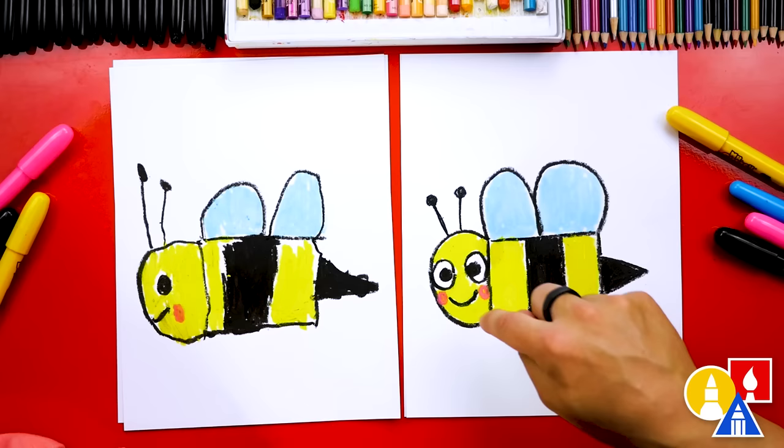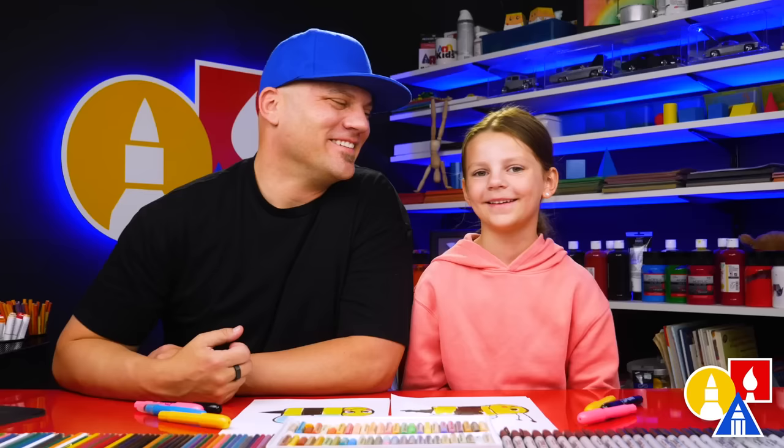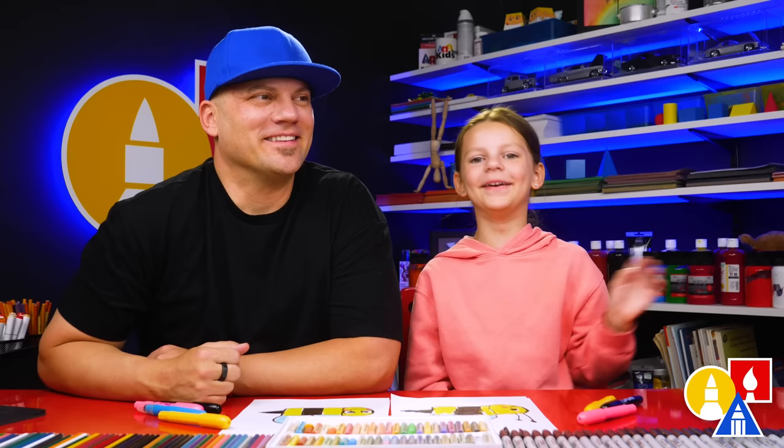And what letter does bee start with? B. Yeah, B. That makes it pretty easy, right? We used the B for the wings. Did you have fun drawing a bee? We do. We hope you had a lot of fun and we'll see you later, our friends. Goodbye.